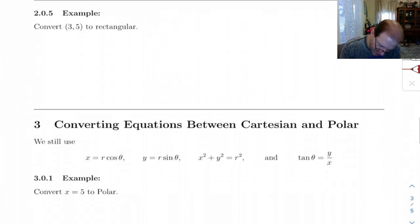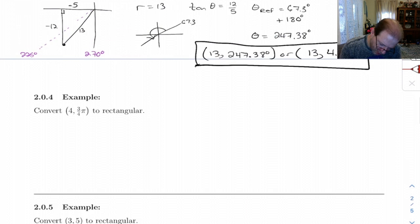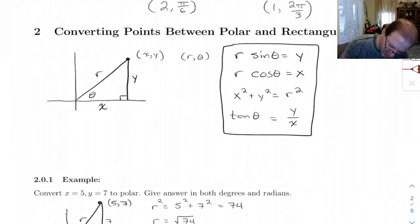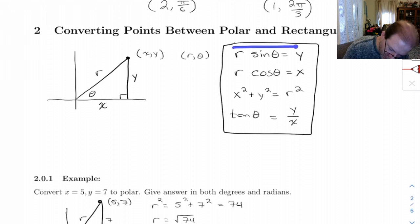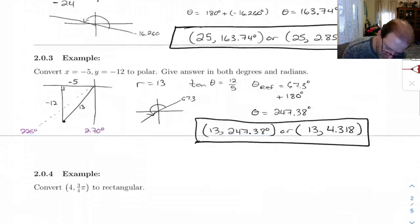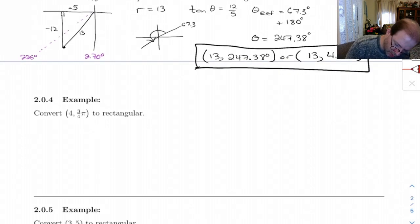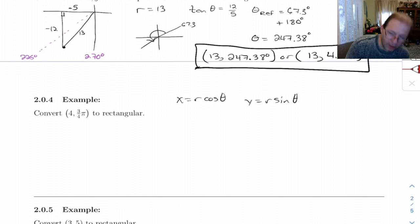Let's see. These next two examples are converting from polar to rectangular. So these are actually pretty straightforward. To do these, what you want to do is just use these two things here. Here, y equals r sine theta, x equals r cosine theta.